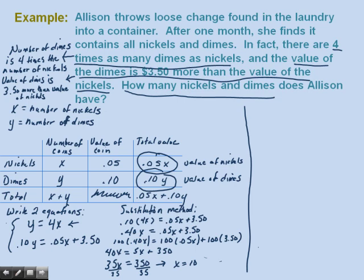With X = 10, we substitute into Y = 4X to get Y = 40. Our ordered pair solution is (10, 40), meaning 10 nickels and 40 dimes.